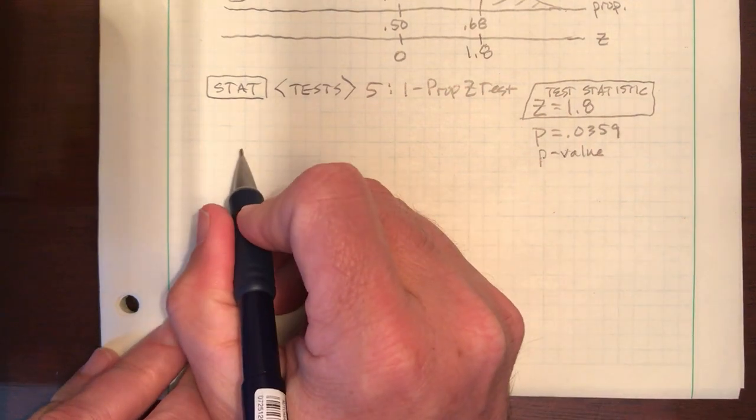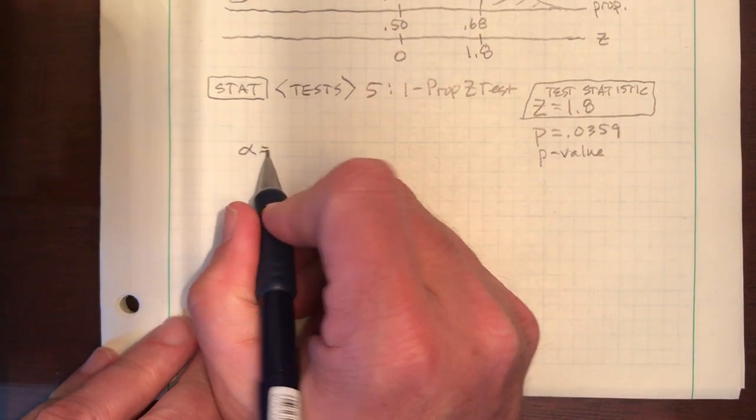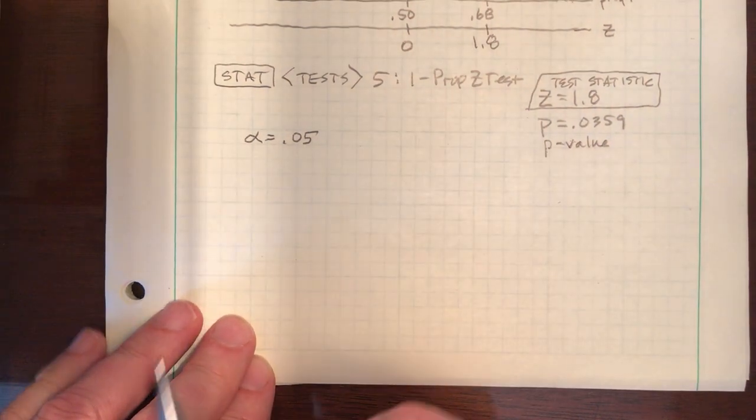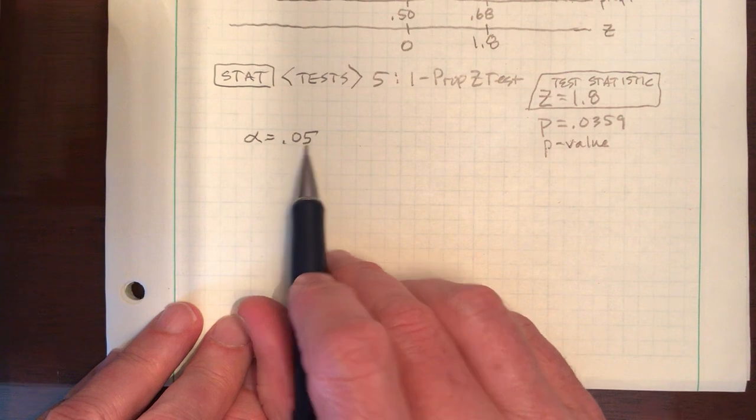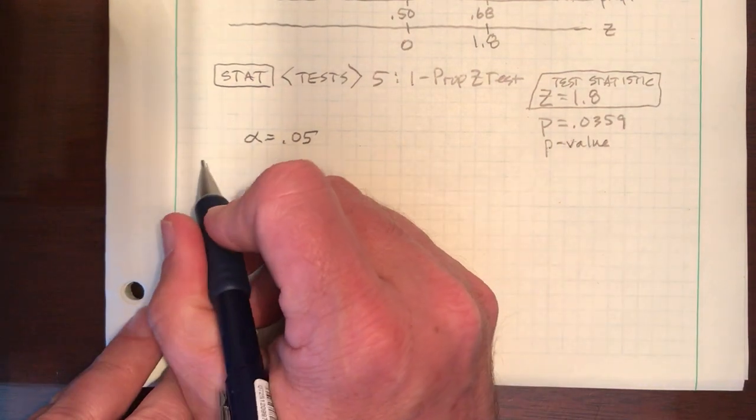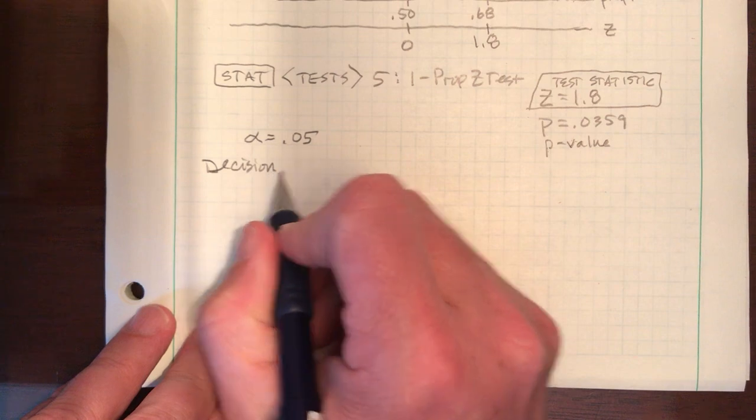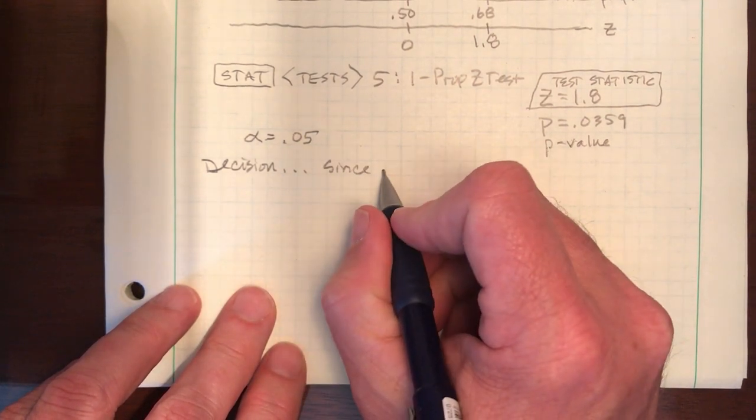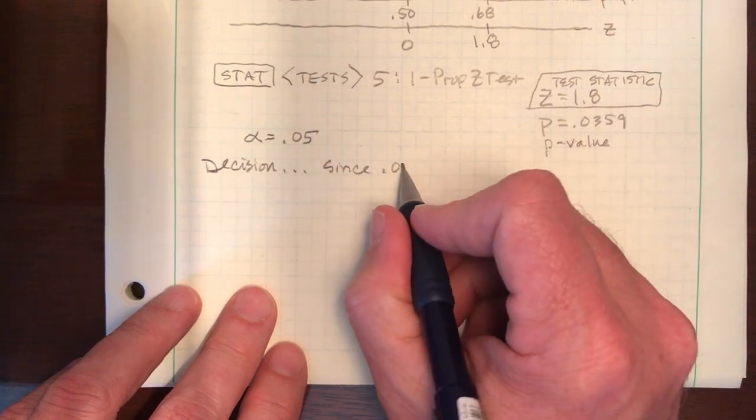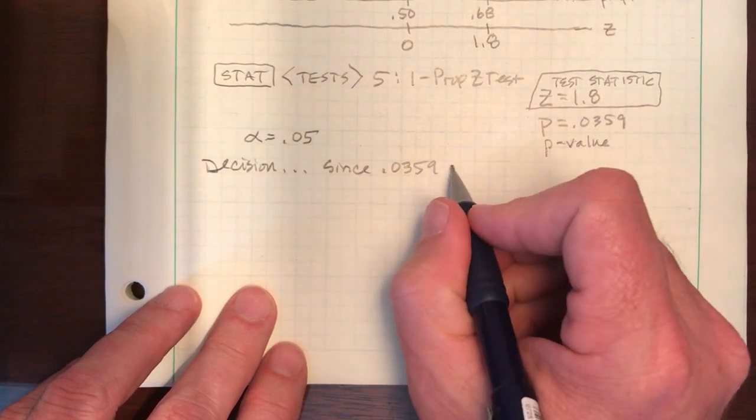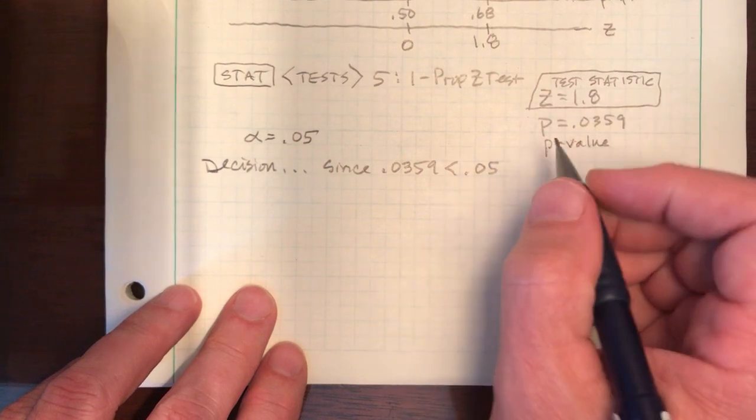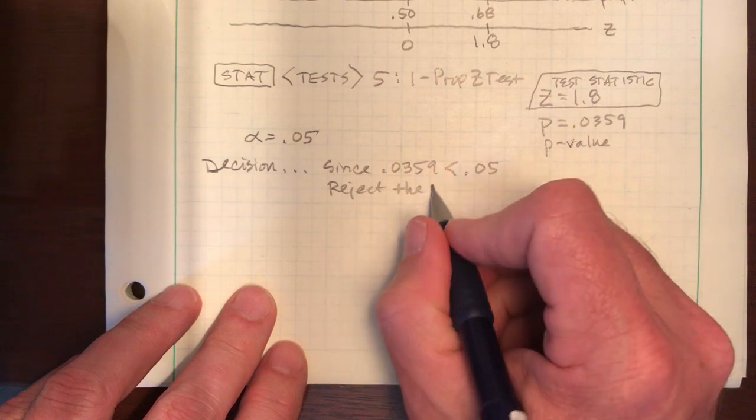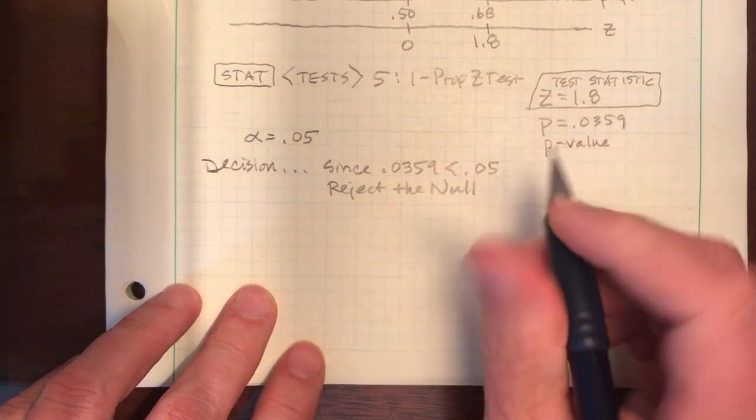I'm going to say that the level of significance, or the alpha level for this problem, is our standard 0.05. And that's all I have, that's all I need to make my decision. And my decision sounds something like this. Since my P value of 0.0359 is less than 0.05, that means we will reject the null.